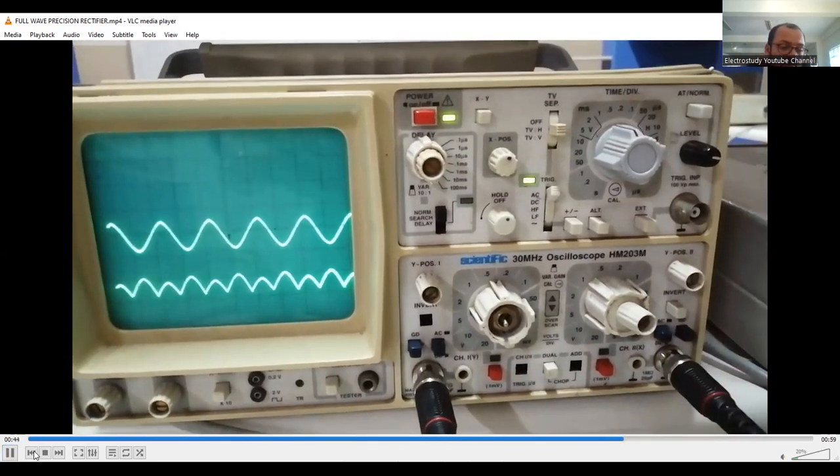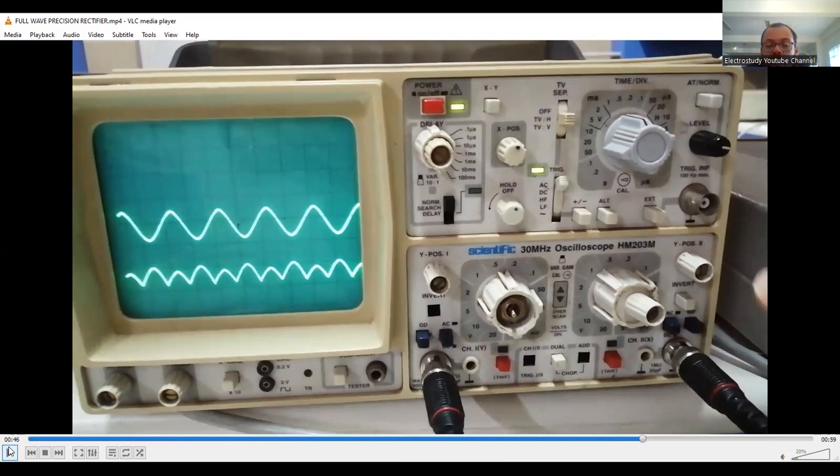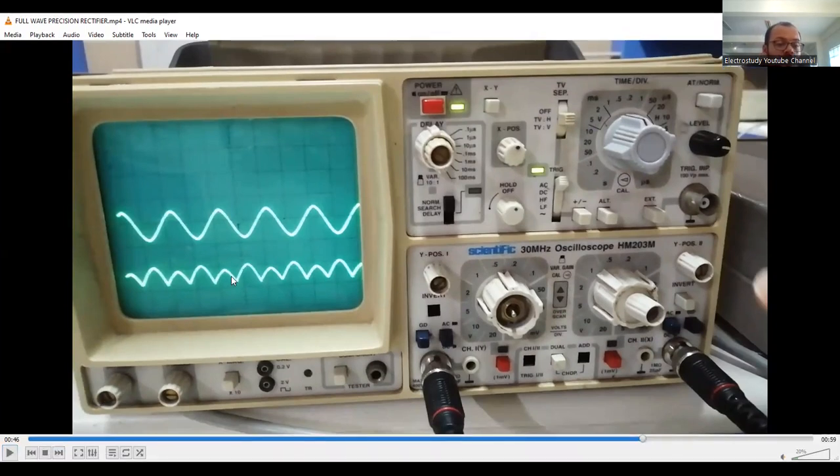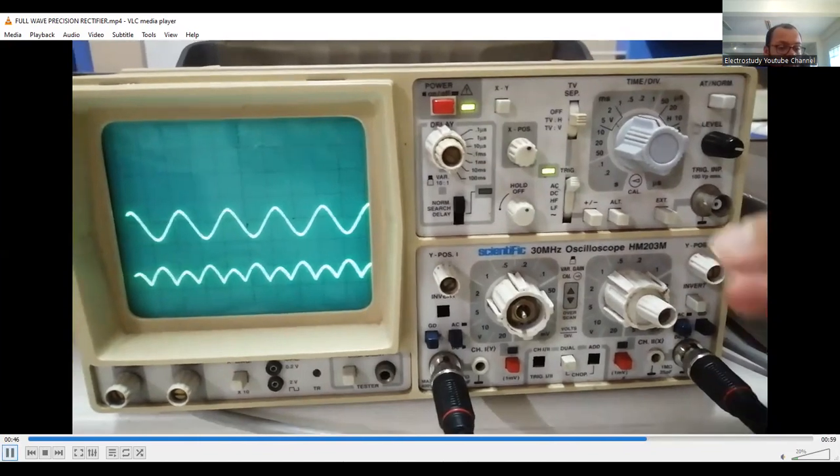Then you can measure the frequency, frequency of input and amplitude of input. Then you can measure the time period. One by frequency is nothing but time period. Similarly, the rectified output you can measure in the CRO. This is the amplitude you can easily measure. So this is the way how to perform the experiment.